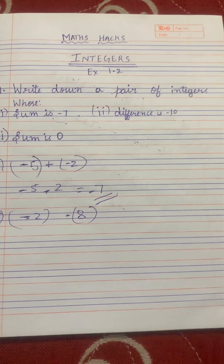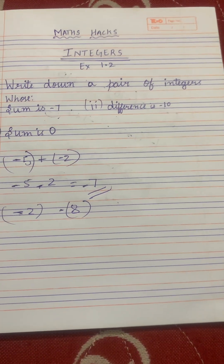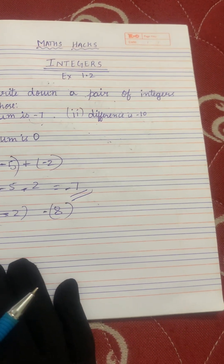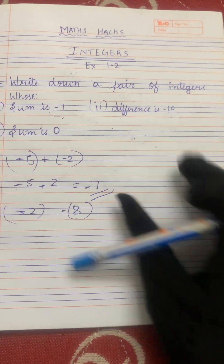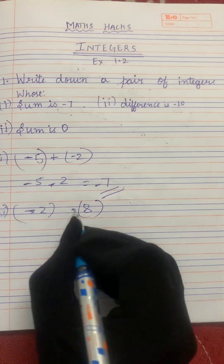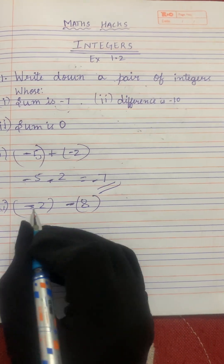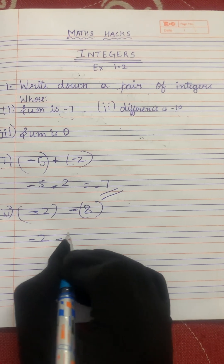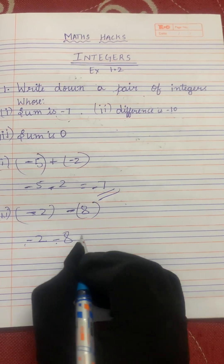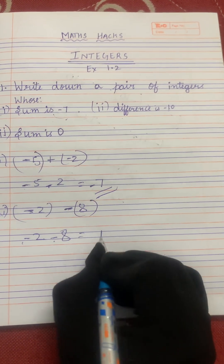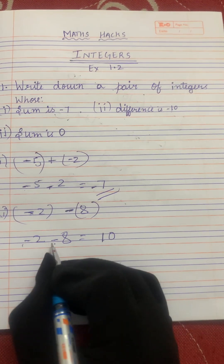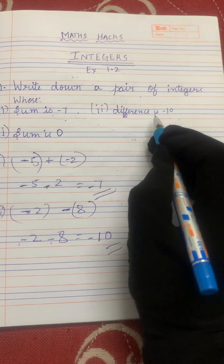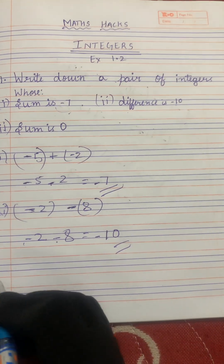We can take any two numbers, but if we subtract both the numbers, we have to get the answer minus 10. Minus 2 minus 8: minus into minus is plus, you get 10, and the greater number's sign is minus. So minus 10 is our answer. We got the answer minus 10.